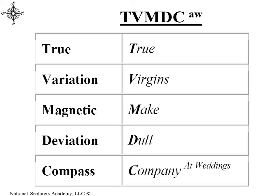So we need to be able to go between three reference systems — that is, if we have a compass course, what is the true course? Likewise, if we have a true course, what is the compass course? We need to be able to work through the three different reference systems. There's a nomenclature: 'true virgins make dull company at weddings,' which is a memory aid or mnemonic to help us remember the process.